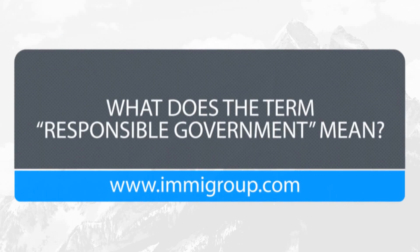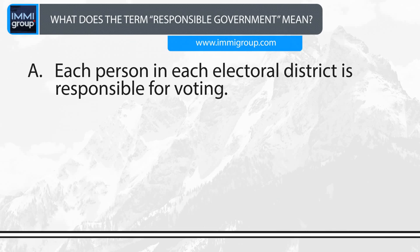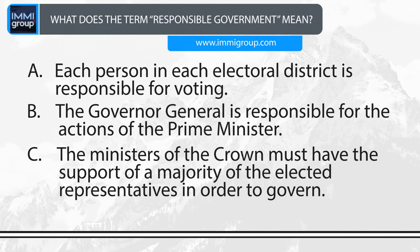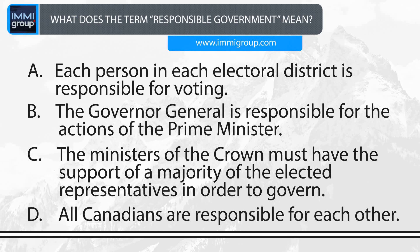What does the term responsible government mean? A. Each person in each electoral district is responsible for voting. B. The Governor General is responsible for the actions of the Prime Minister. C. The ministers of the Crown must have the support of a majority of the elected representatives in order to govern. D. All Canadians are responsible for each other.